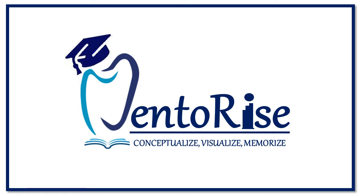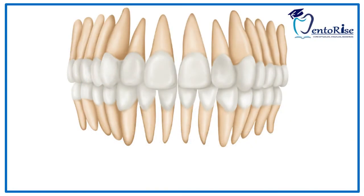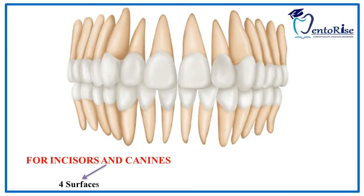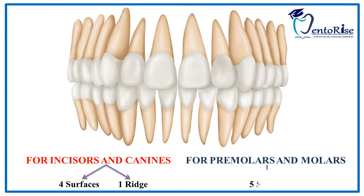We at Denterize welcome you all to a platform where we help you to conceptualize, visualize and memorize dentistry. The crowns of incisors and canines have 4 surfaces and 1 ridge, while premolars and molars have 5 surfaces. You can take an extracted tooth in your hand, hold it in the same way it is present in the mouth, observe in the video and relate to the tooth.